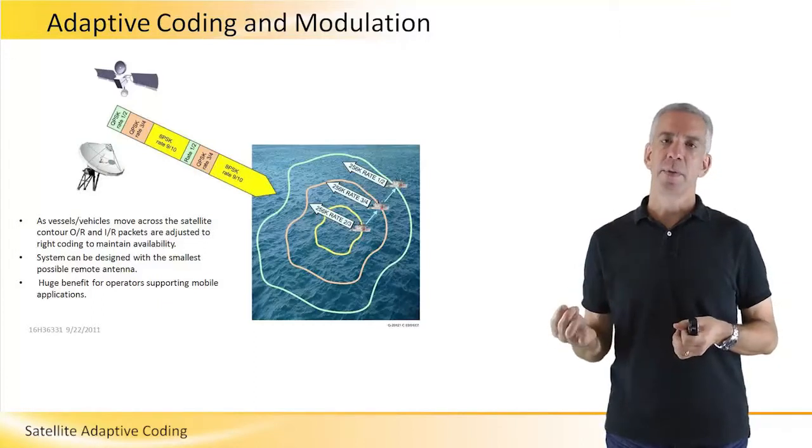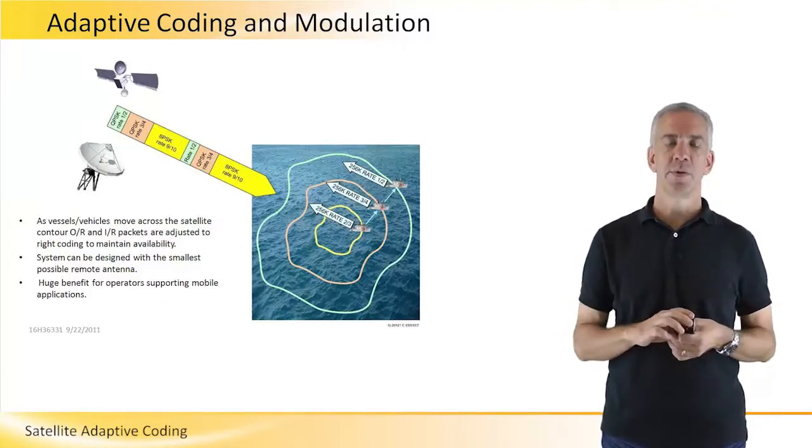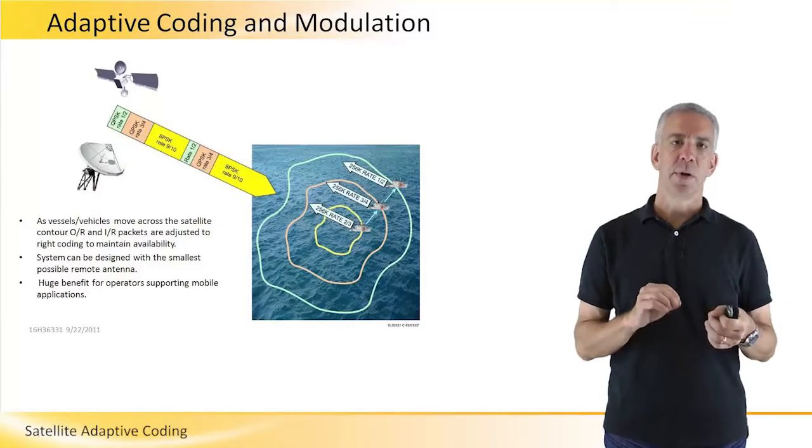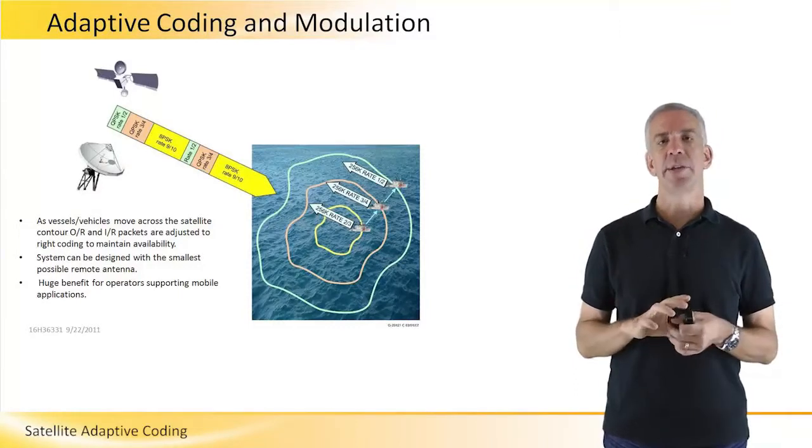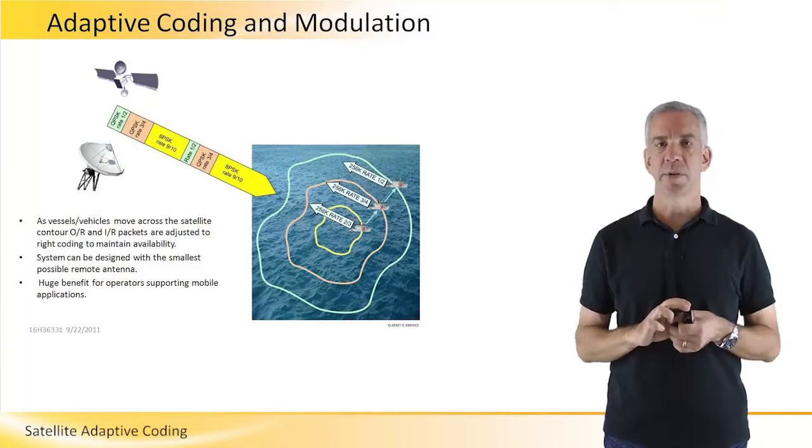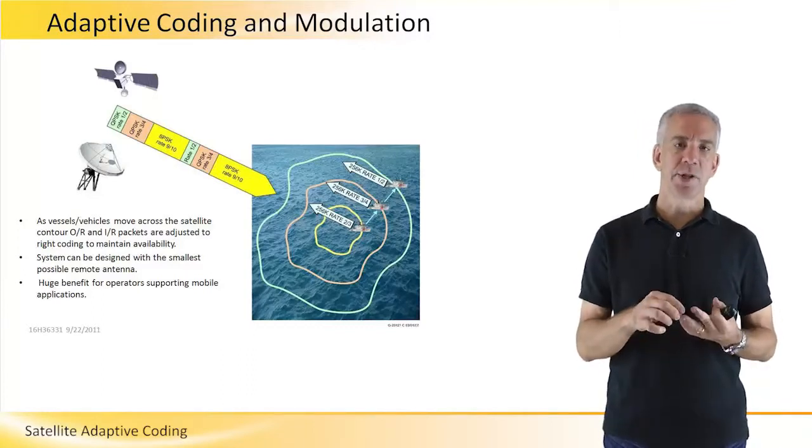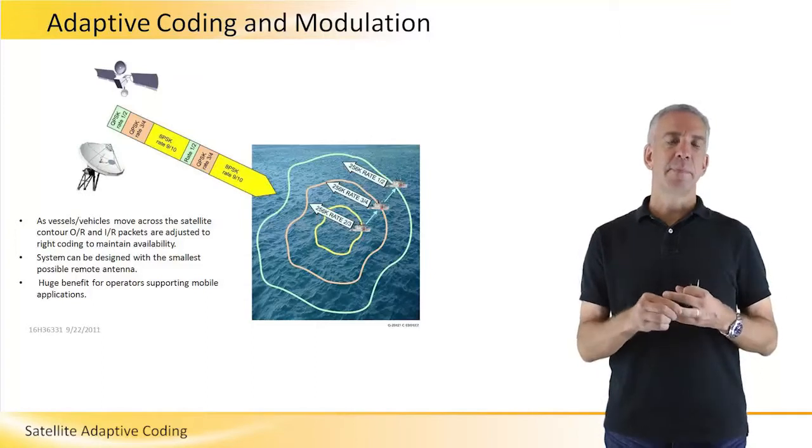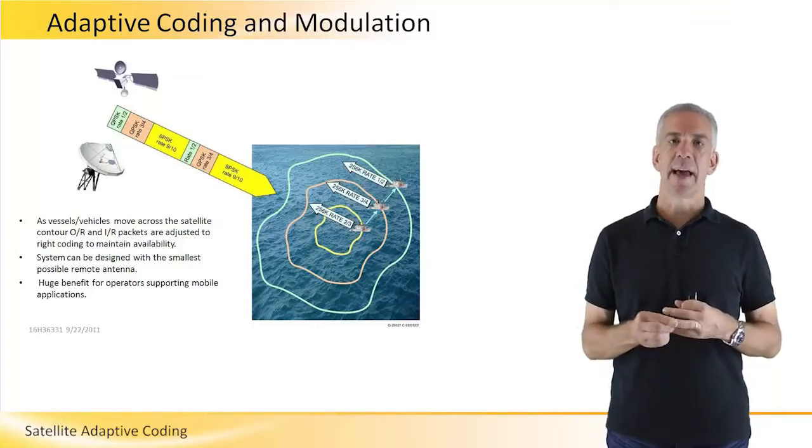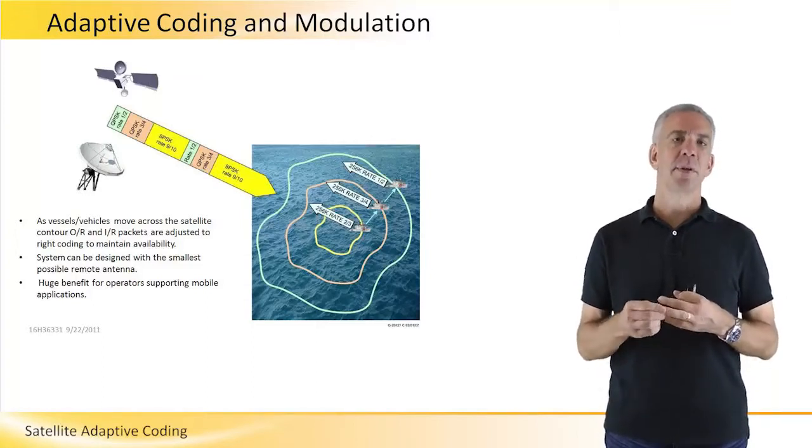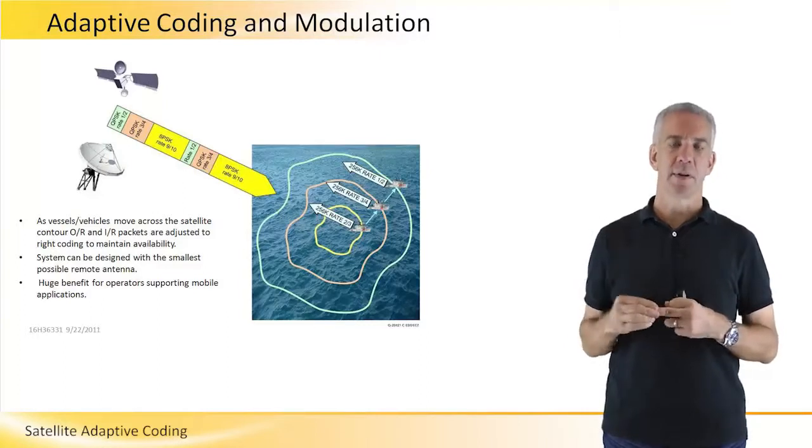The remote sends instruction to the gateway or hub station to change the combination of modulation or coding. Changing the modulation from 8PSK to QPSK enables better received signal at the remote.